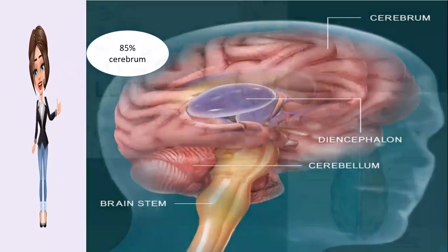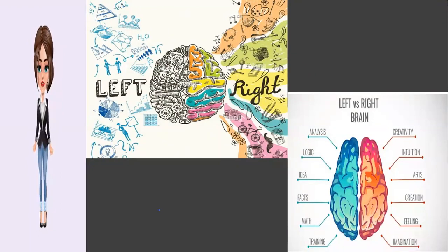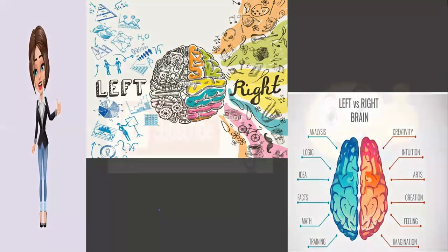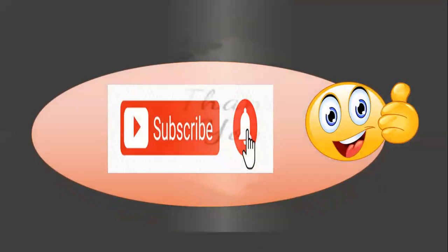The cerebrum is divided into left and right hemispheres. The right hemisphere controls the muscles on the left side of the body and the left hemisphere controls the muscles on the right side of the body.